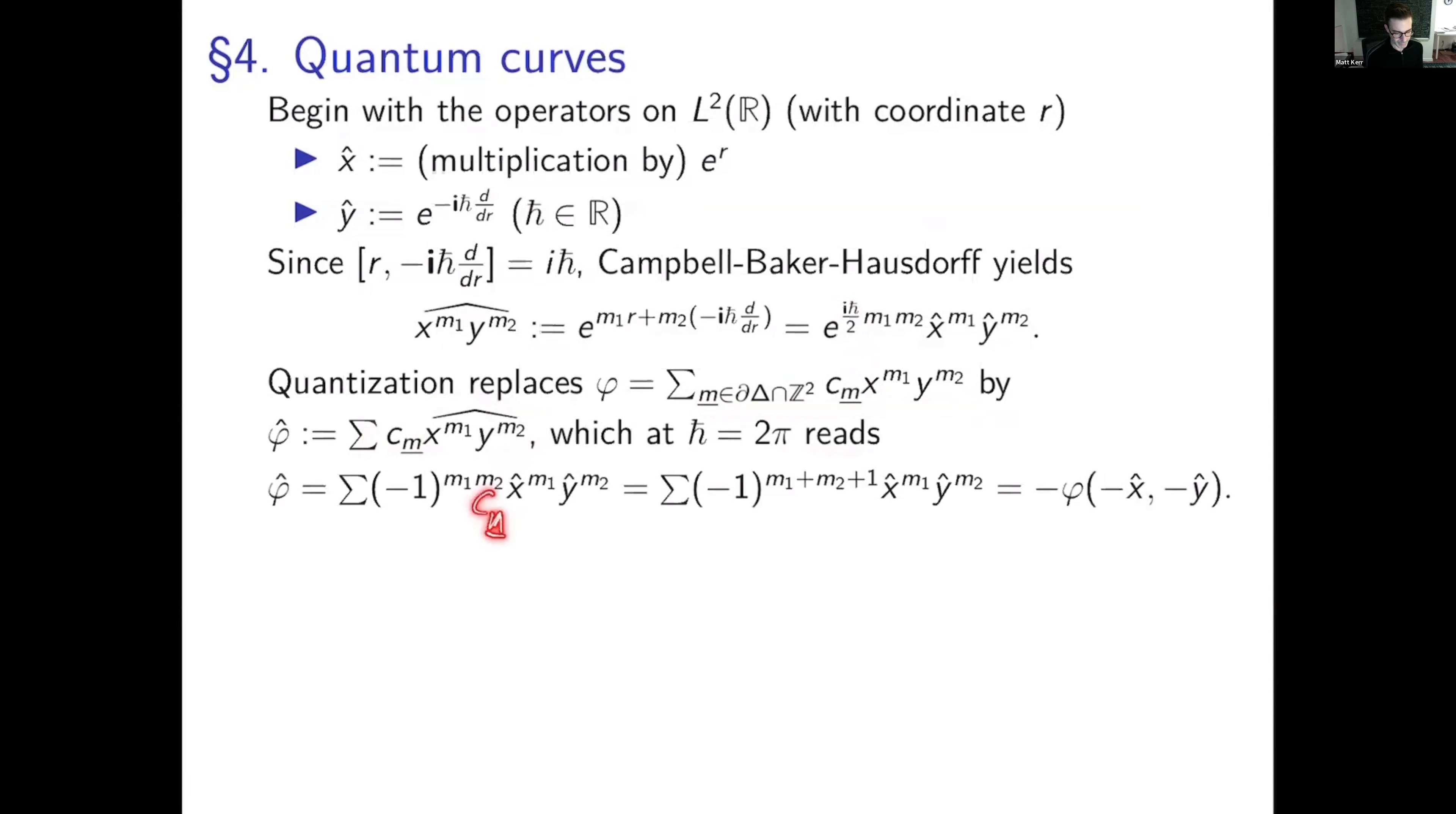Okay, so what's going on? I have my sign to the m1, m2. I'm telling you that sign is the same to the m1 plus m2 plus 1. That's because m is on the boundary of a reflexive polygon, that I have that equality. And so I can now say, well, this is nothing but minus phi evaluated at minus x hat minus y hat formally. And so I'll use this, that the quantum operator can be written this way.